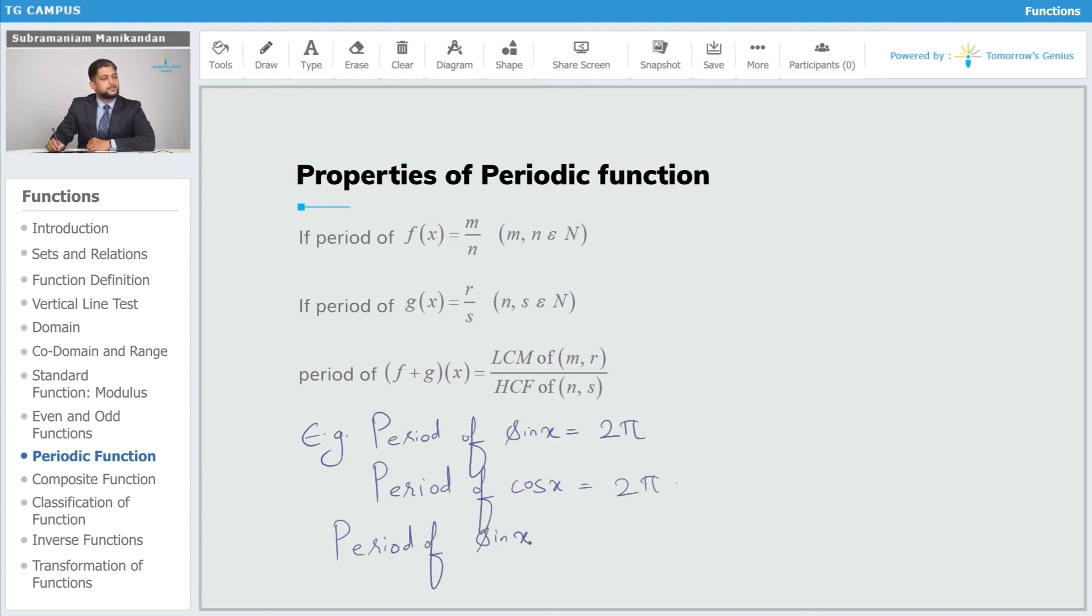sin x plus cos x—of course here 2π is not a natural number so this rule does not apply, but we can find the period of sin x plus cos x by multiplying it by root 2 and then dividing it by root 2, so the 1 upon root 2 becomes cos π by 4, so we get sin of (x + π by 4), and thus the period of sin x plus cos x is also 2π.